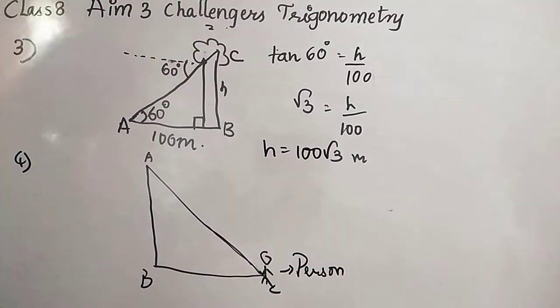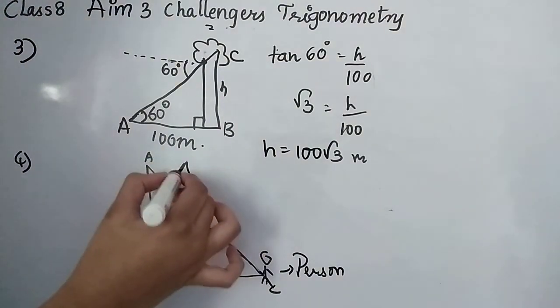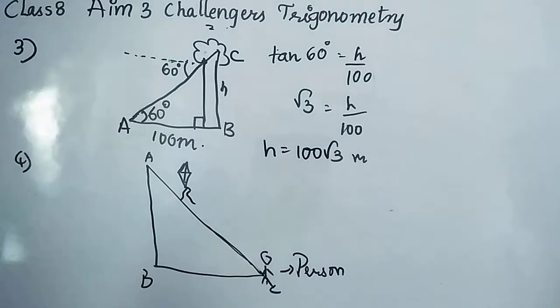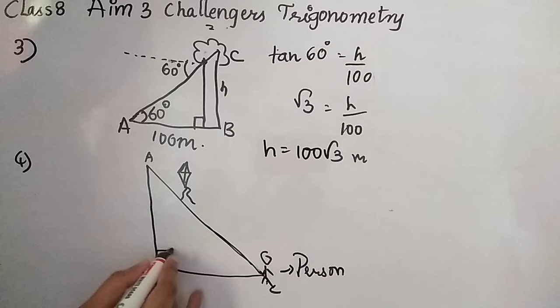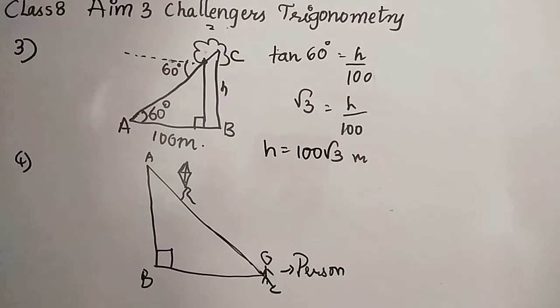So C is nothing but the person. Right, I told you just now. And this is A is the kite. Right, okay. And B, right angled, fine. So this criteria. So we completed both the challenge questions.